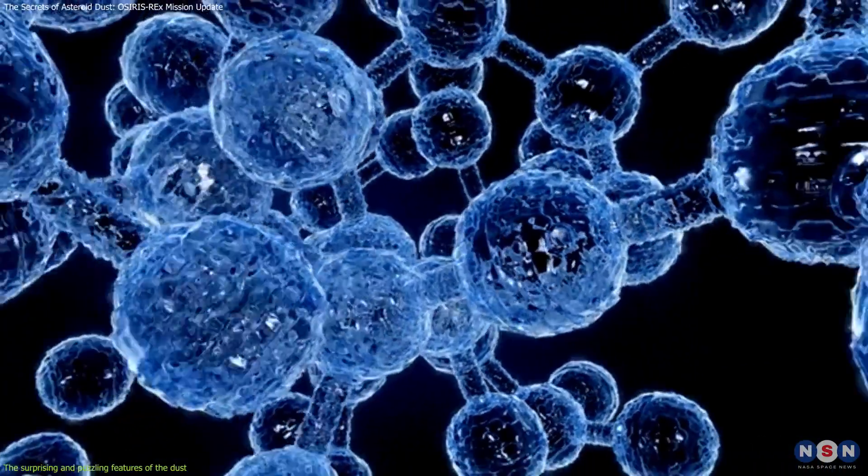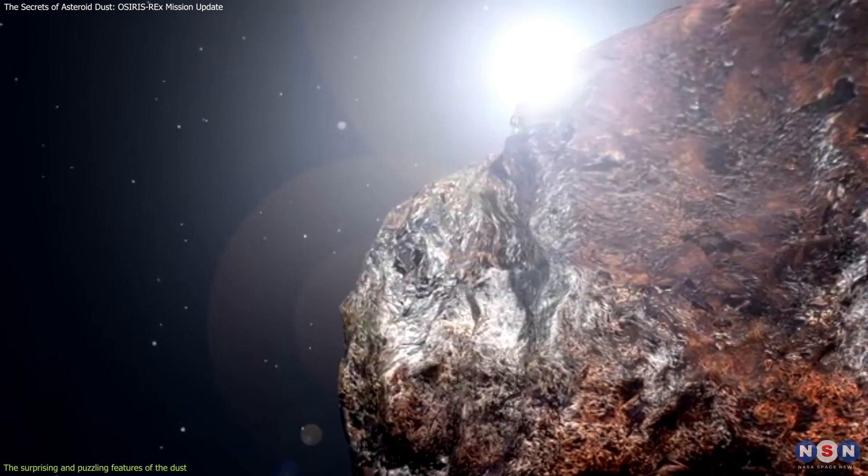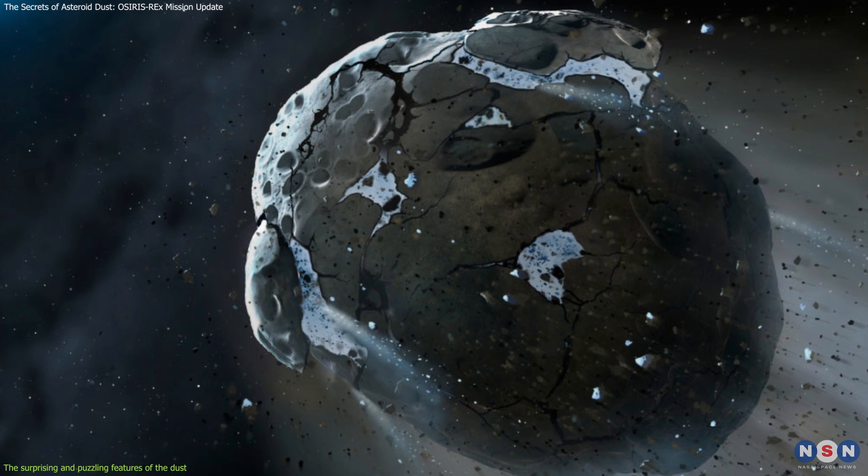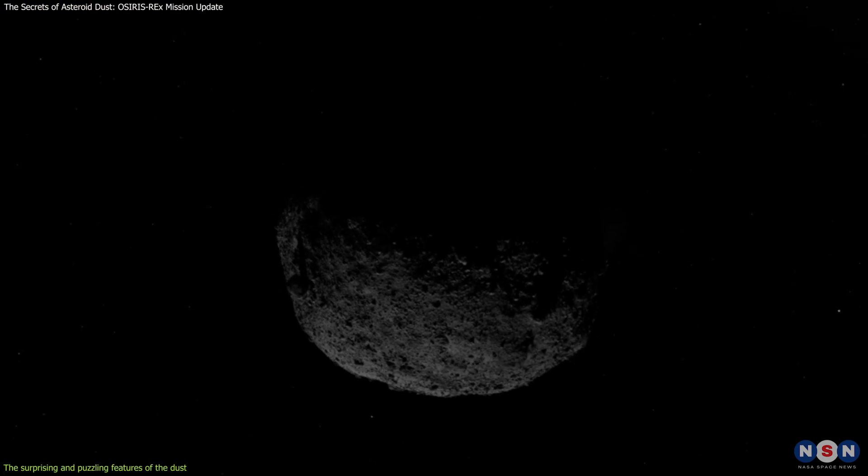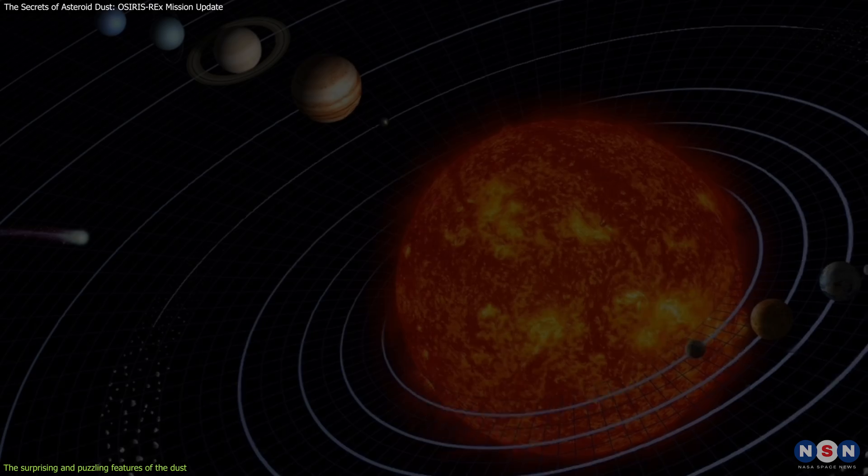The dust also contained hydrated minerals and organic molecules, which could suggest that Bennu was once part of a larger body that had water and possibly life. These features are important and interesting because they could shed light on the origin and evolution of Bennu and the solar system.